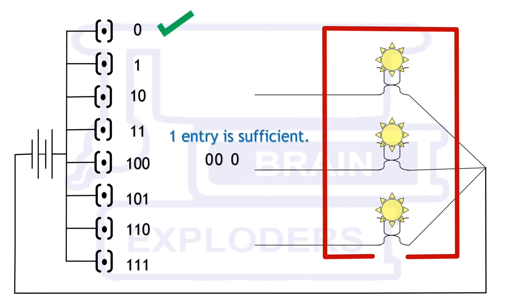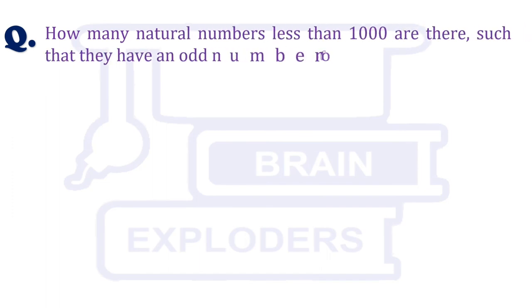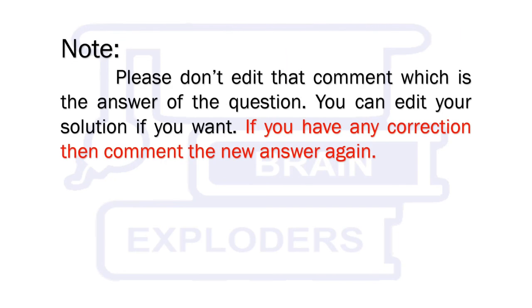Let's move to our another question. How many natural numbers less than 1000 are there such that they have an odd number of factors? Try this question and comment as the solution.